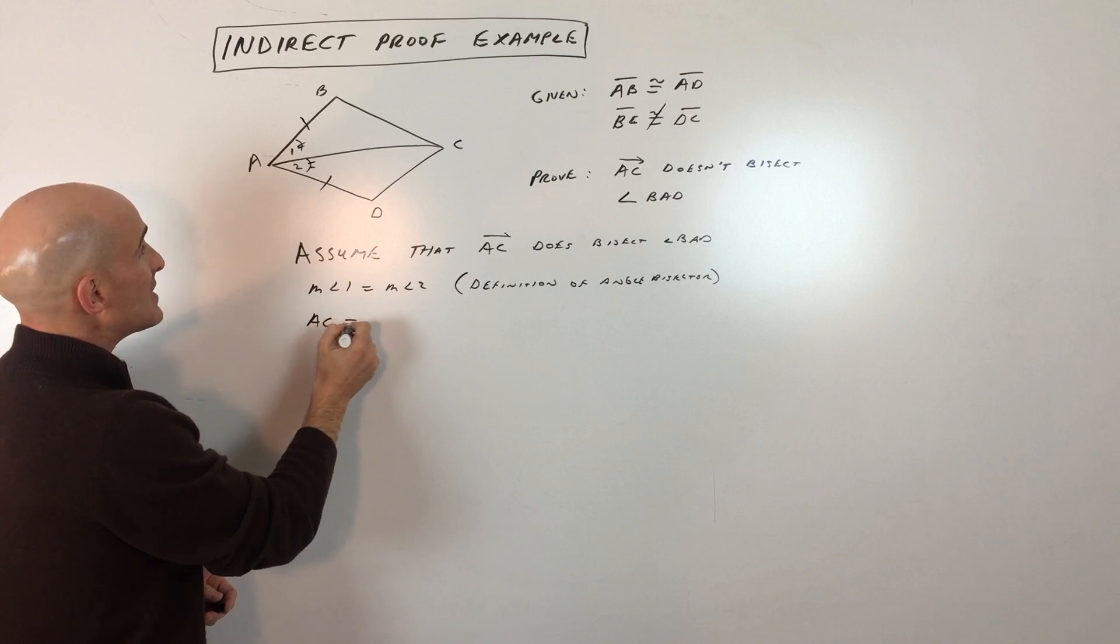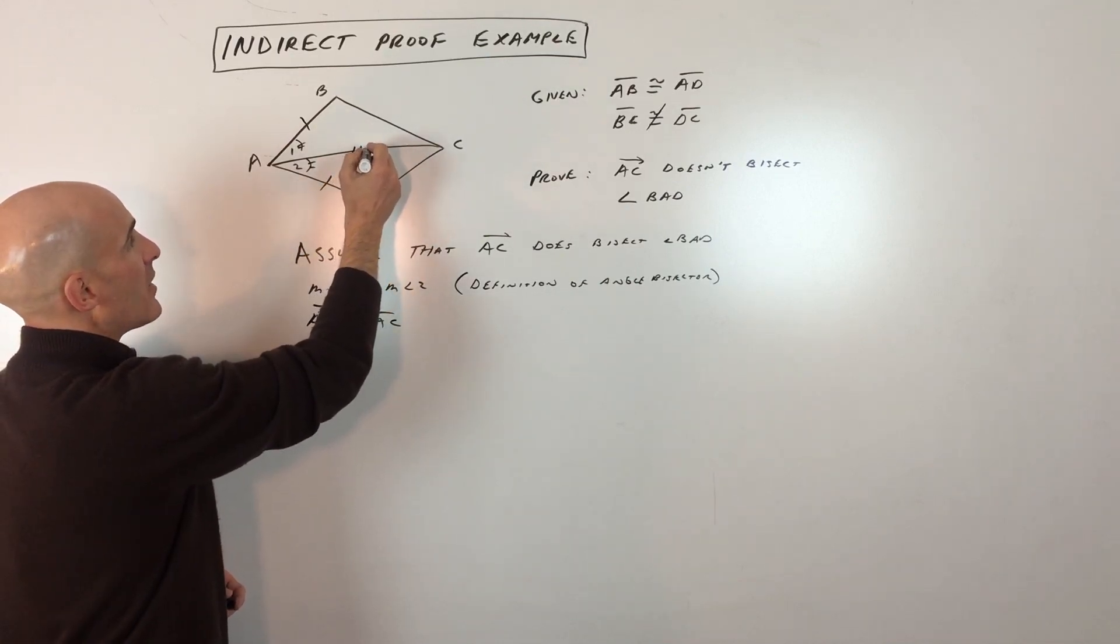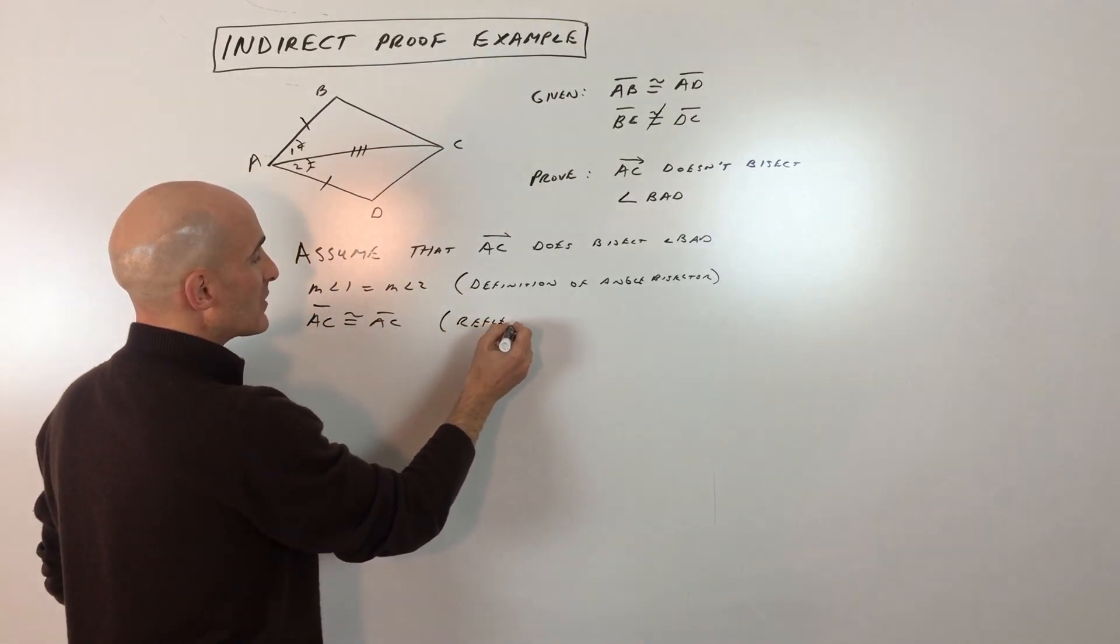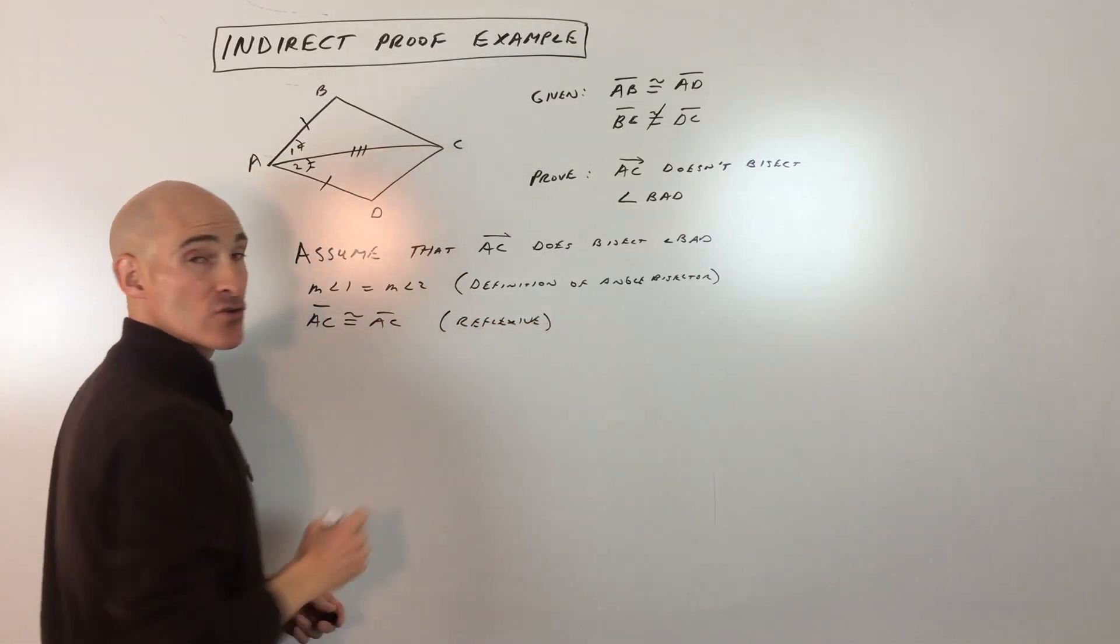We also know that AC is congruent to AC, it's congruent to itself. That's by the reflexive property—anything is congruent to itself.